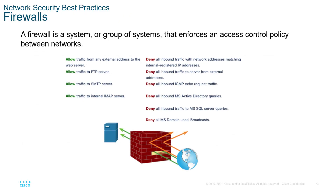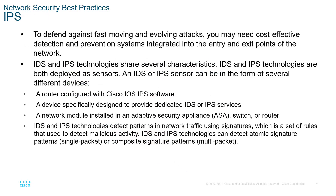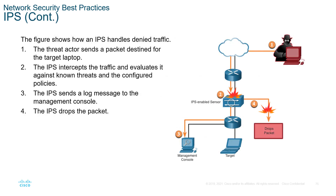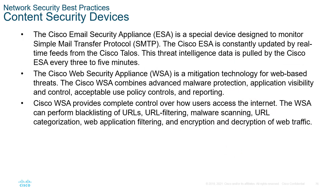Firewalls prevent things that are not allowed from entering the network. IPS — intrusion prevention system — and IDS — intrusion detection system — are ways to prevent intrusions. IPS is active: when a packet comes in, it can drop the packet, alert someone, send a log — it can do something. IDS normally just monitors. We also have ESAs and WSAs — email security appliances and web security appliances — for filtering.